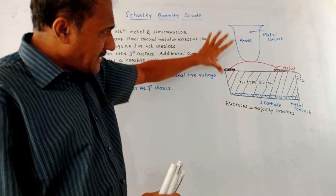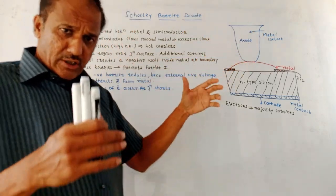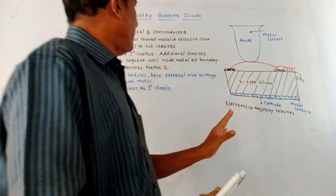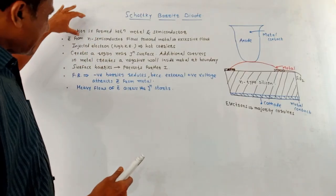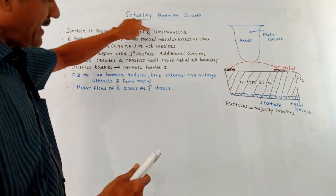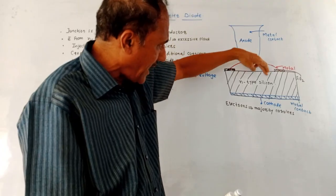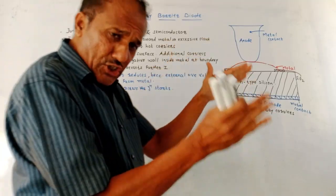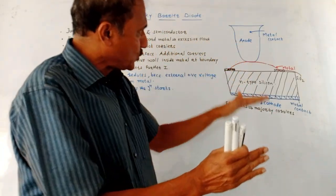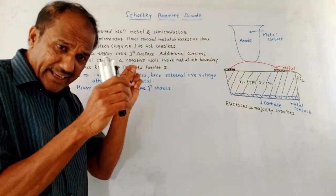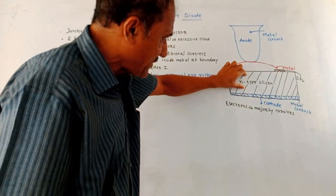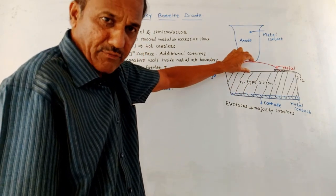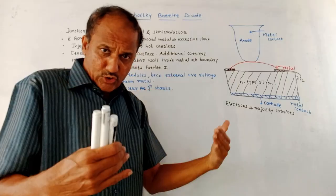In the case of a Schottky Barrier Diode, the major principle is that electrons are the majority carriers. The junction is formed between metal and semiconductor — specifically between the metal and the N-type silicon. Whenever this junction is formed, electrons from the N-type semiconductor start flowing towards the metal surface with very high velocity.